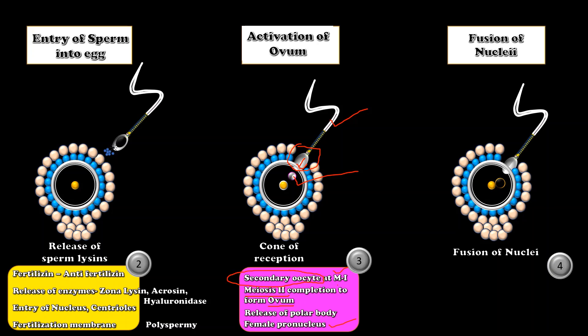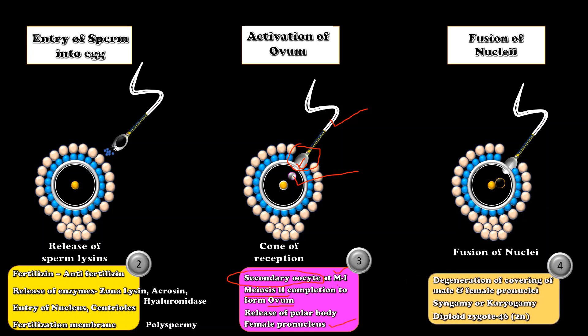The next step is fusion of the nuclei of sperm and egg. The nuclear membrane of both nuclei dissolves and there is a mixing of chromosomal material to form a synkaryon. This act is called syngamy or karyogamy. The fertilized egg is now called the zygote.